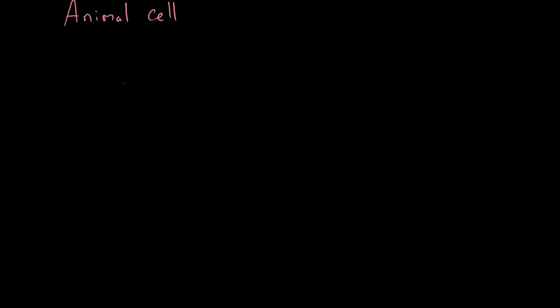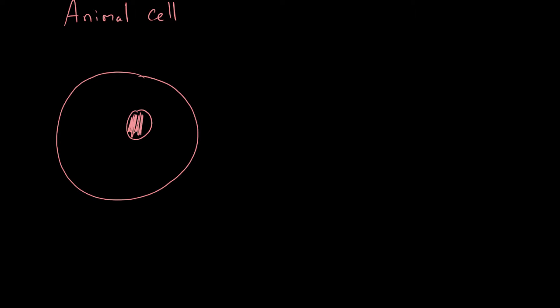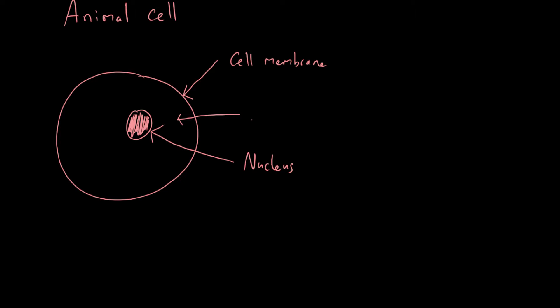Let's look at an animal cell. We can normally just draw it as a circle. We can straightaway label three things: the protective barrier on the outside is known as the cell membrane; this blob in the middle is called the nucleus; and the space around it - in reality a thick gel-like liquid contained in all cells - is known as the cytoplasm.